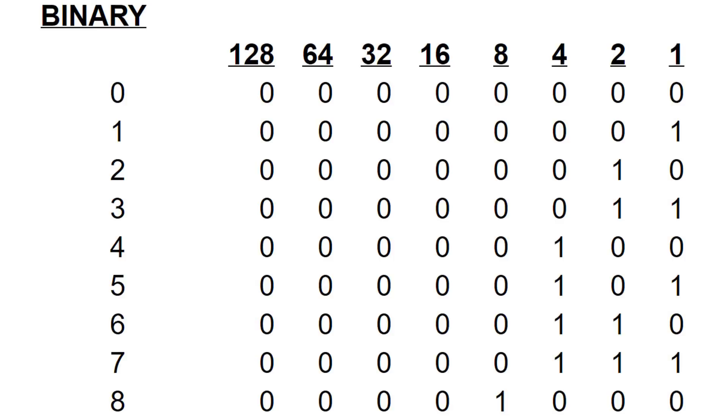Now binary is exactly the same, except we're dealing in base two, not base ten. All you have is zero and one. And what happens is you actually have to have different columns, but they're not going up in base ten anymore — they're going up in base two. Here is a table showing you how you write down the first few numbers using binary. Rather than units, tens, and hundreds, what we have now is powers of two: one, two, four, eight, sixteen — it doubles each time, because that's what happens with a power of two.